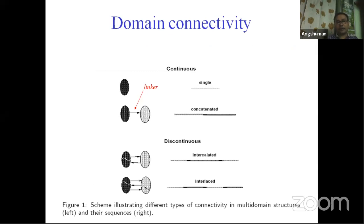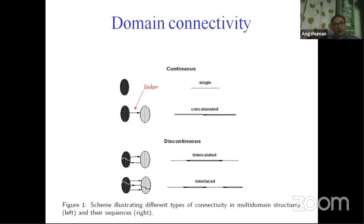The functionality of a protein is based on how the different domains are joined together. A protein may contain a single domain, may contain concatenated domains — that means two domains joined by a linker region — or may contain intercalated domains, where one domain has two parts and another domain is intact. There are also interlaced domains where both domains contain different subdomains or subunits. In a broad sense, domains can be classified as continuous and discontinuous, and this arrangement gives us an idea about the specific structure and function of the protein.